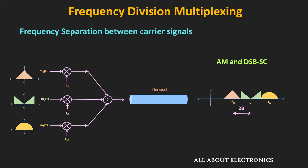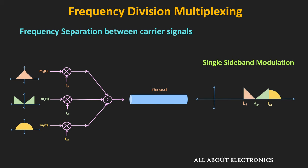In case of single sideband modulation, either the upper or lower sideband is transmitted. So the bandwidth of the modulated signal is the same as the message signal bandwidth. That means if all signals are single sideband modulated, the minimum separation required between the two carrier frequencies is equal to B. But as noted, some guard band is also kept between the two signals. So during FDM, if the message signal is single sideband modulated, more users can be accommodated in the given channel bandwidth.